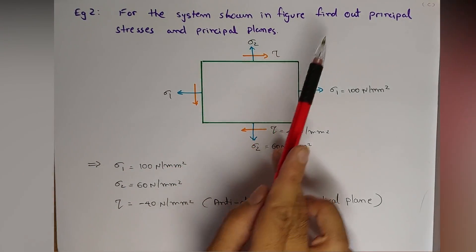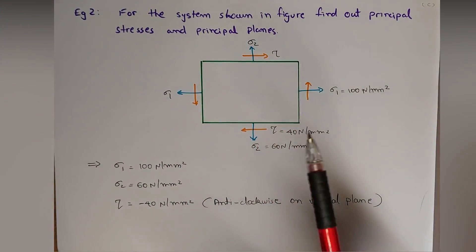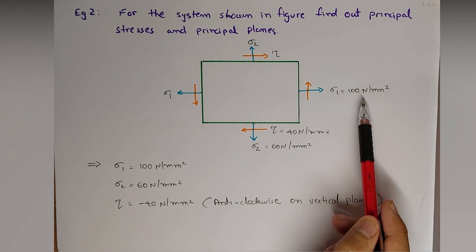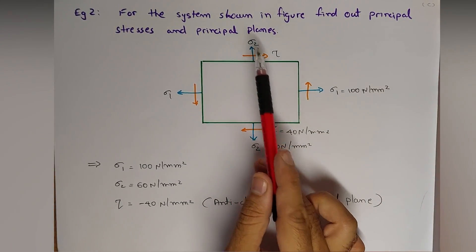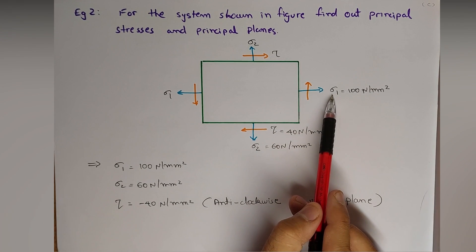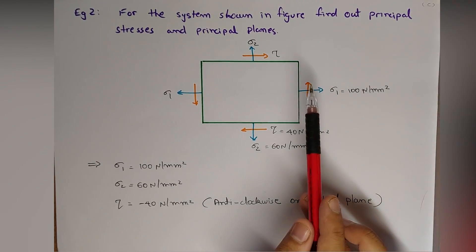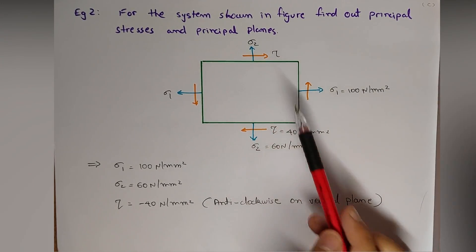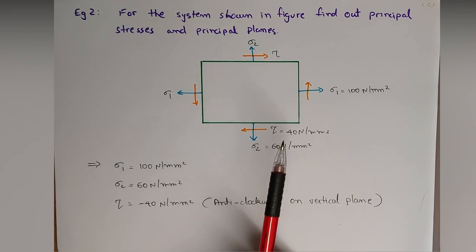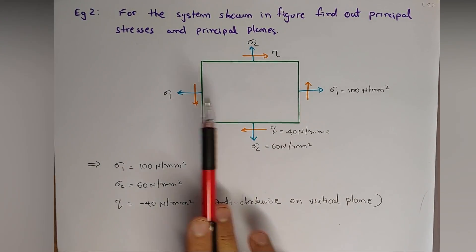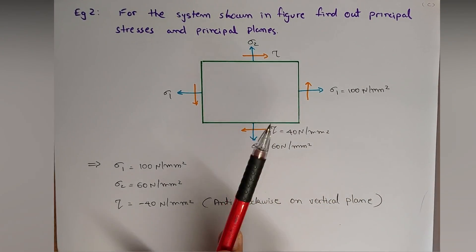For the system shown in the figure, find out the principal stresses and principal planes. Here sigma one is 100 Newton per mm square, tensile. Sigma two is also tensile, it is 60 Newton per mm square. One thing different from the previous numerical is that shear stress tau is also acting at 40 Newton per mm square. To keep this material stable, complementary shear stress is also acting by default to keep it in equilibrium.